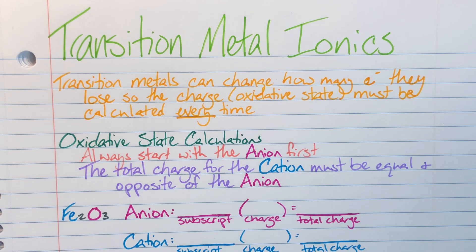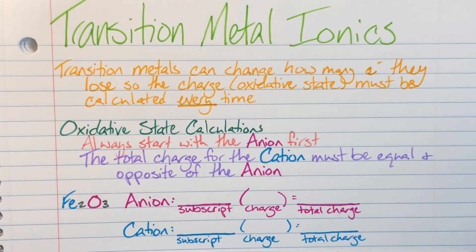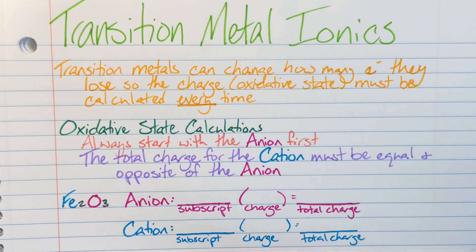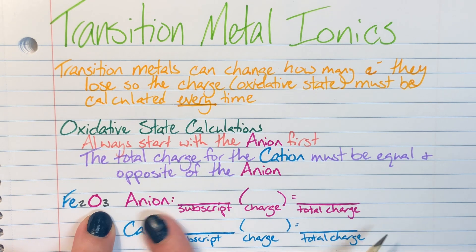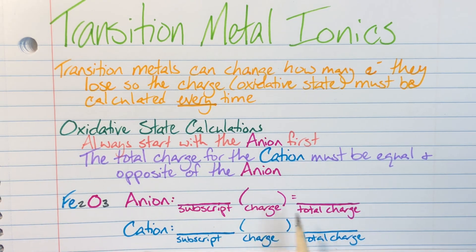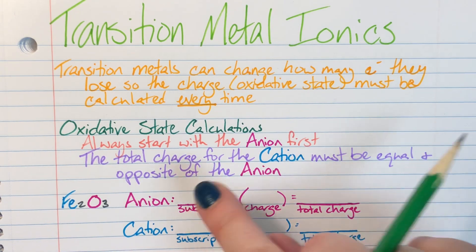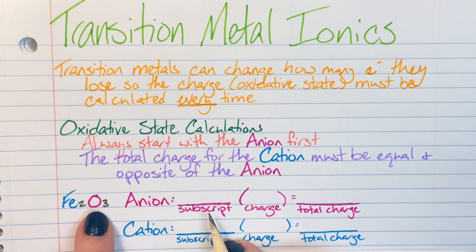I have a handy dandy little formula here for how to figure out what the charges are for the cation, for anything that is going to be a transition metal. Here I have my actual compound here. I have Fe2O3. My anion is going to be oxygen. It's coming second. And I will deal with that first. I have a sort of formula here. I have subscript, charge, and then my total charge. And I am going to figure out my anions information first, and that will help me with my cation. My anions subscript is three.